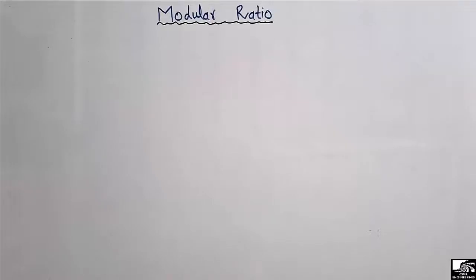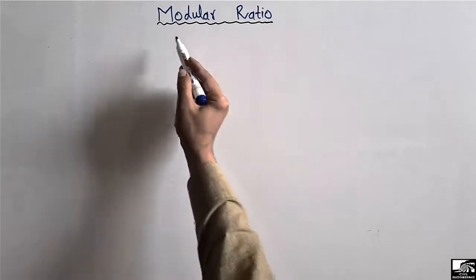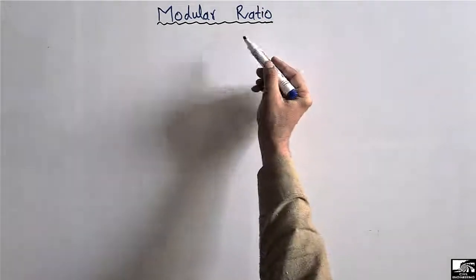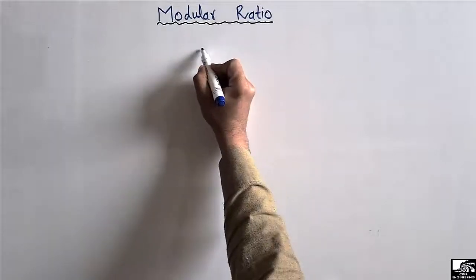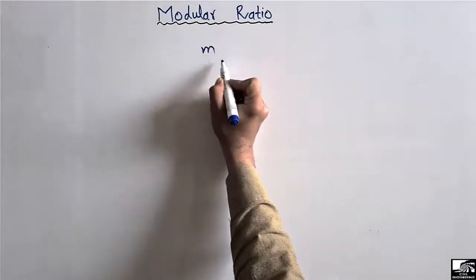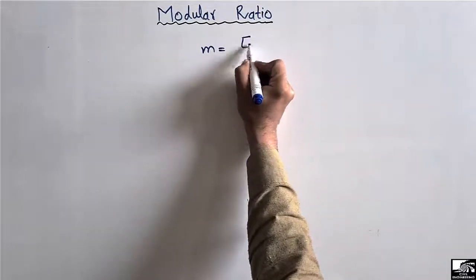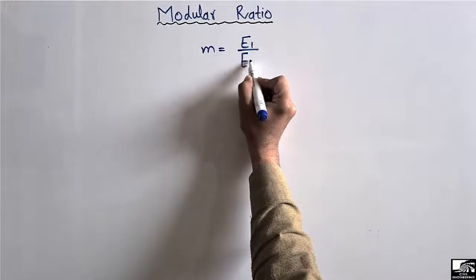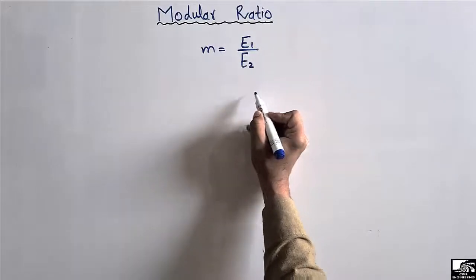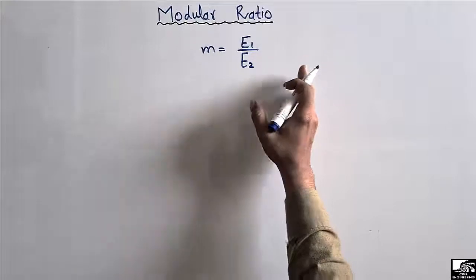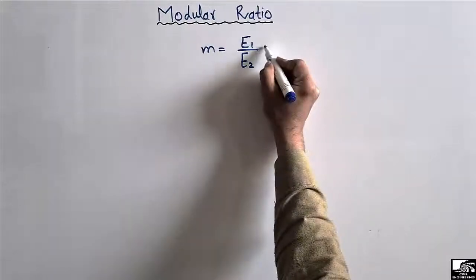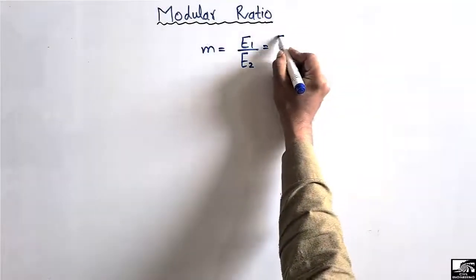Welcome back to Useful Engineering YouTube channel. Today our lecture is about the modular ratio. It is the ratio of the elasticity of two different materials, generally represented by small m. In reinforced concrete structures, we are mostly concerned with steel and concrete.